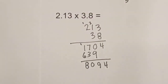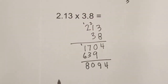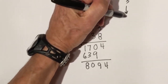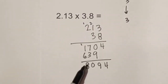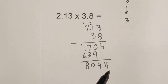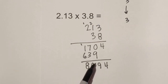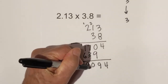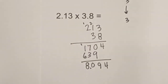We go back to our original count which is 3, and we need 3 numbers to the right of the decimal. Count from the far right: 1, 2, 3 — the decimal goes right there. So it would be 8 and 94 thousandths.